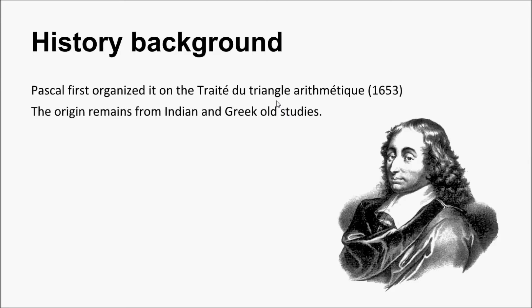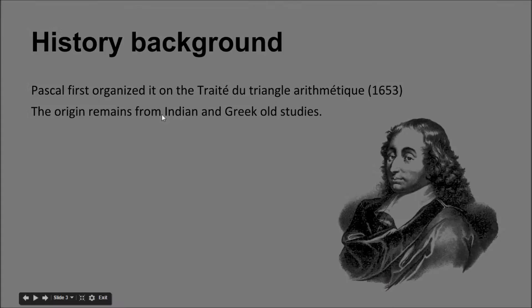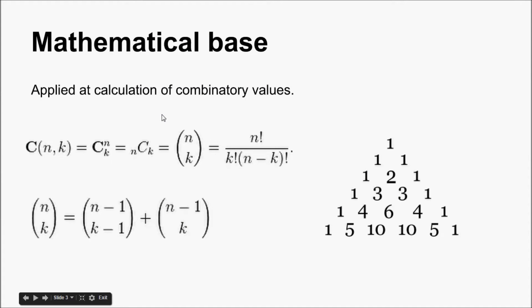In mathematics, Pascal's triangle is a triangular array of the binomial coefficients. It is named after the French mathematician Blaise Pascal in the Western world, although other mathematicians studied it centuries before him in India, Iran, China, Germany, and Italy.